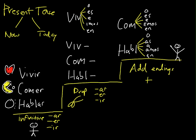Now there's only one difference between ER and IR verbs. And that is the NOSOTROS form. For ER verbs, it is E-M-O-S. And for IR verbs, it is I-M-O-S.